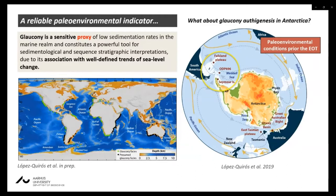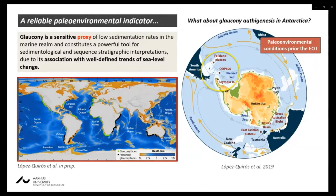Glauconite represents a tool for sedimentological and sequence stratigraphic interpretation due to its association with well-defined trends of sea-level change. An in-progress compilation shows places where this mineral has been identified. Glaucony autigenesis in Antarctica has received little attention compared with other mid-to-low latitude Cenozoic glaucony records. Cenozoic glaucony-bearing phases have been reported in late Eocene sedimentary sequences in Antarctica, but the genesis, depositional setting, and environmental implications remain loosely constrained, providing an opportunity to study paleoenvironmental conditions before the onset of major Antarctic glaciations.